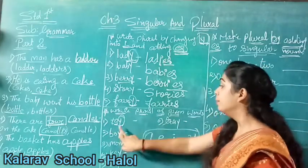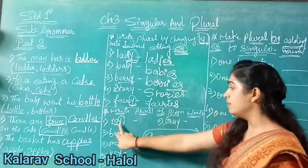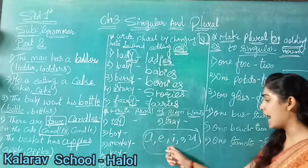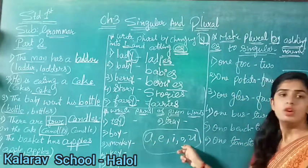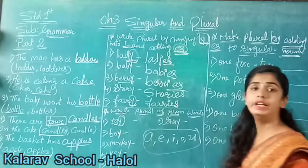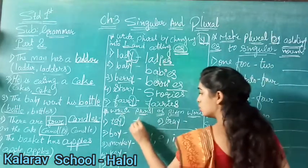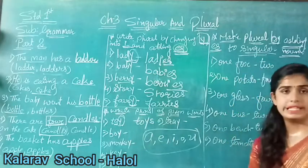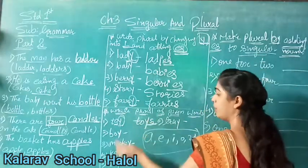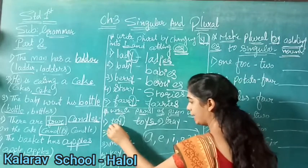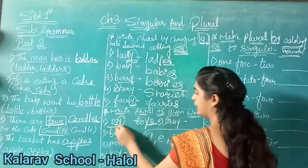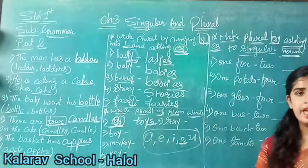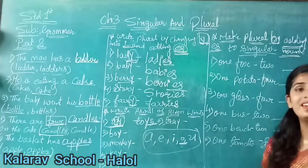Before Y, if there is any vowel - A, E, I, O, or U - whatever the vowel is, we will only add S. So here our answer will be toys. Why do we add only S here? Because before Y in the word toy, there is a vowel O. So that's why we have written toys.